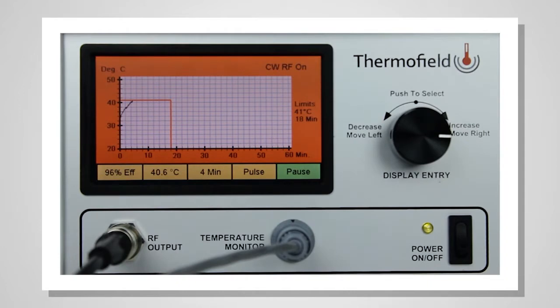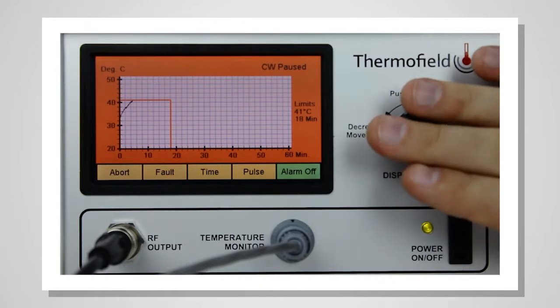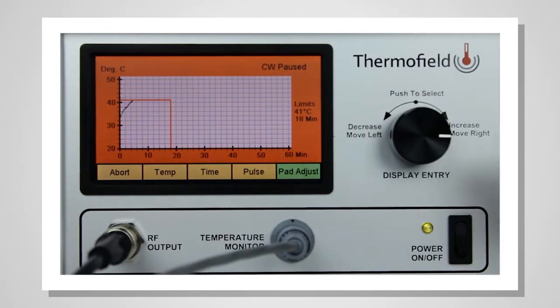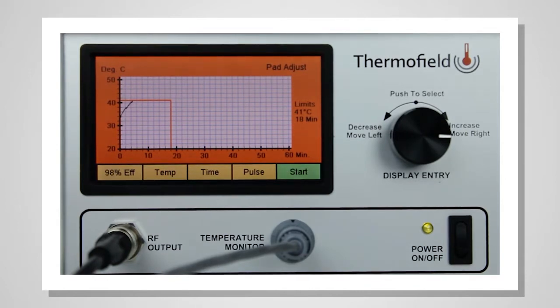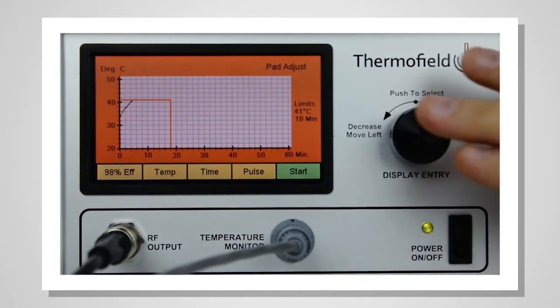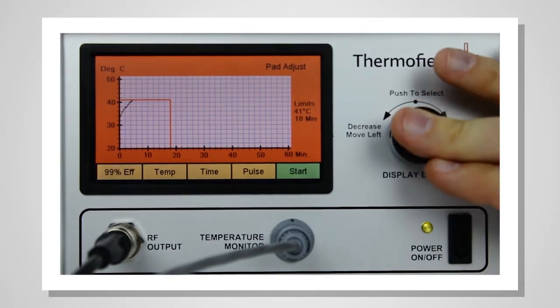If the pad gets disconnected or the treatment begins to fail, an alarm will sound. Push the knob to stop the alarm, then push the knob again to select PAD ADJUST. As soon as the efficiency is high enough, the pane will read START. Push the knob to continue the treatment.